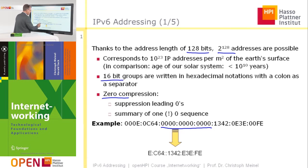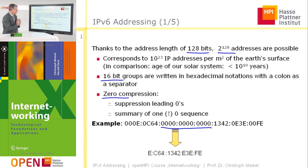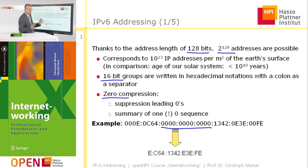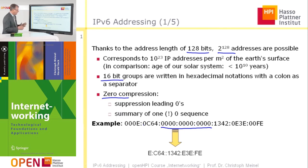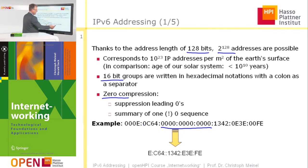Instead of 0,C,B,C we have only C,6,4. The three blocks of zeros are omitted — you see this represented with a double colon. Then we have 1,3,4,2 where nothing needs to be done. The block 0,E,3,E has its leading zero compressed, so instead of 0,E,3,E we have E,C,3. And here two leading zeros are omitted, leaving only F,E.